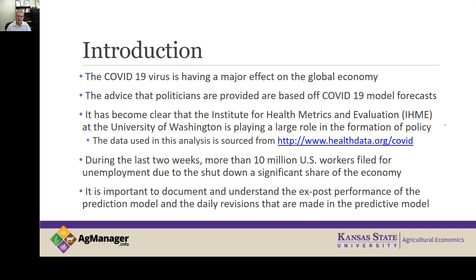The COVID-19 virus is having a major effect around the globe, and in order to fight that, it has had a major effect on the global economy. At least in the U.S., the advice that politicians are provided is based off these COVID-19 model forecasts. In recent briefs by the Trump administration, it's been clear that the Institute for Health Metrics and Evaluation, IHME, at the University of Washington is playing a large role in the formation of policy, both from a health perspective and an economic perspective.